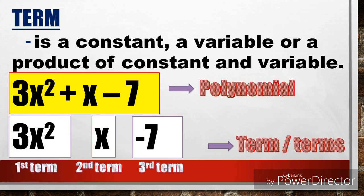Now let's have the definition of term. A term is a constant, a variable, or a product of a constant and variable. In the polynomial 3x squared plus x minus 7, we have 3x squared as the first term, x as the second term, and negative 7 as the third term. So in this polynomial, we have 3 terms.